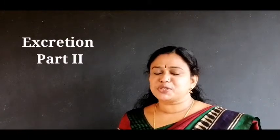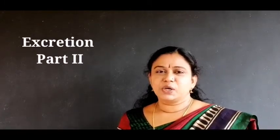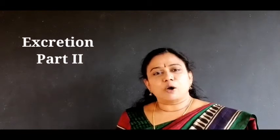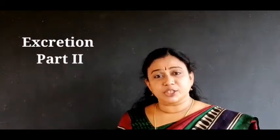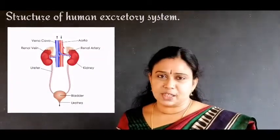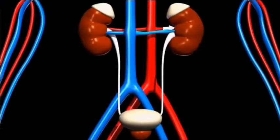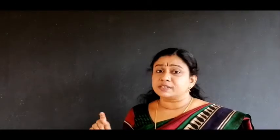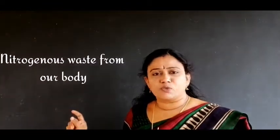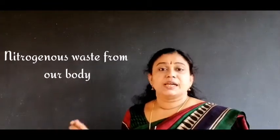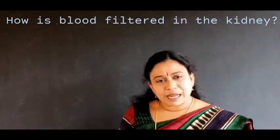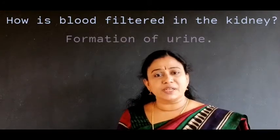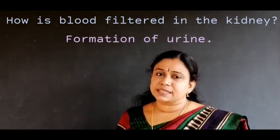Welcome to Ray's biology class. Last class we discussed the structure of the human excretory system, the organs associated with it, and their functions — the excretory system filters out nitrogenous waste from the blood. Today we will discuss how filtration of blood takes place inside the kidney, or how urine is formed and excreted out.